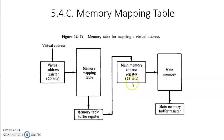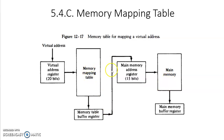That means this 20-bit address is converted into a 15-bit address, because main memory has only 2 to the power of 15 memory locations. This is how the virtual memory concept works — even though the CPU generates a 20-bit address, with the help of the memory mapping table and hardware, that large address is converted into a smaller address to retrieve the required data. Similar to cache memory organization, there is a chance of getting a hit or miss, and here the miss is called a page fault.